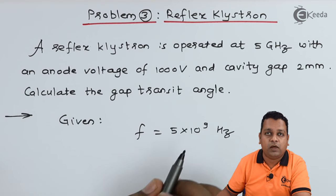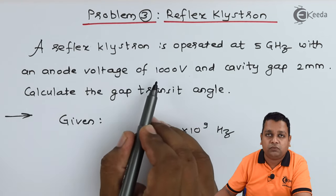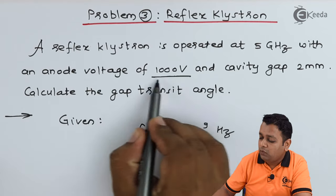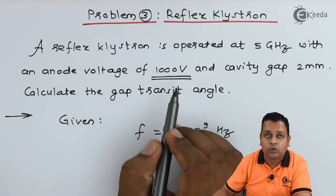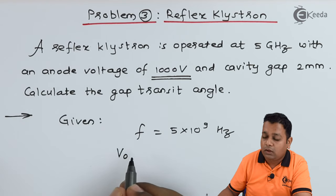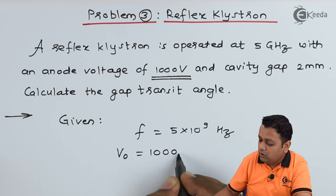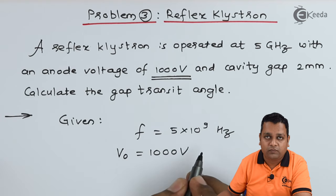Next to that, the anode voltage value is given to us, it is 1000 volts. The anode voltage is always denoted for the reflex klystron by capital V subscript 0. So V0 = 1000 volts, it is the second value.